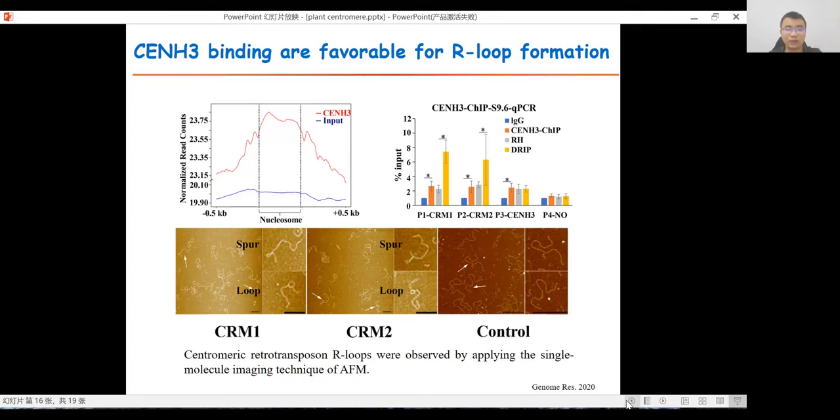We further found that R-loops were relatively co-localized with the CENH3 nucleosomes. Analysis of CENH3-ChIP-seq distribution profile around centromeric R-loops indicated that the centromeric R-loop formation region was highly enriched in CENH3 nucleosomes. Centromeric retrotransposon R-loops were observed by applying single-molecule imaging technique of AFM.